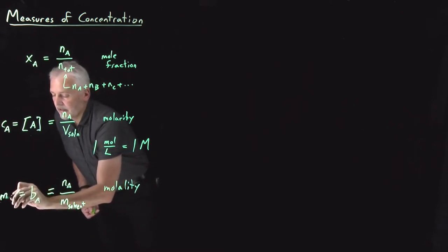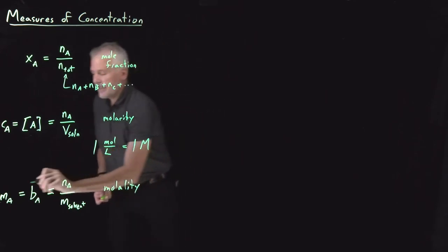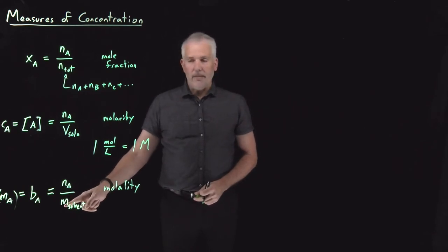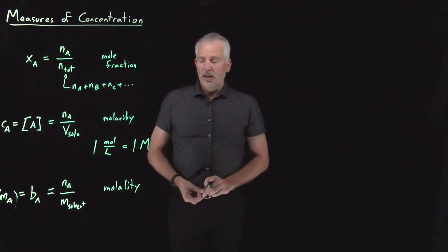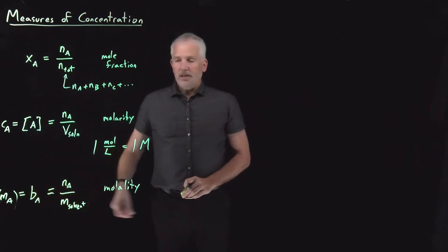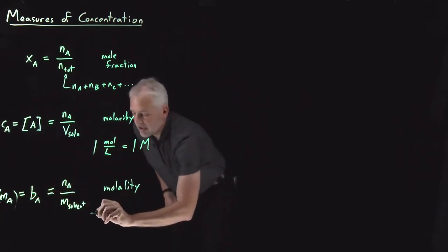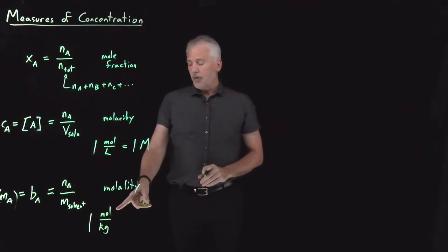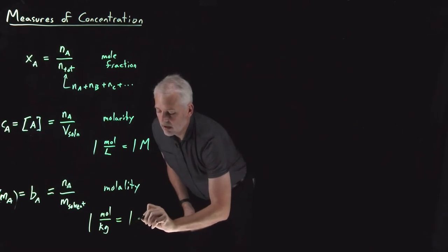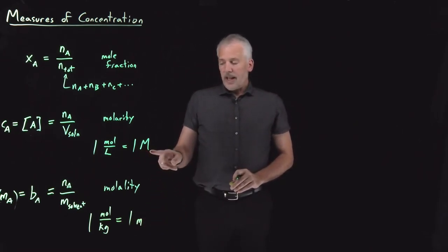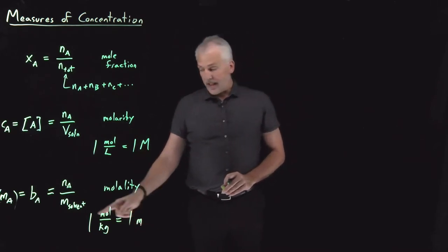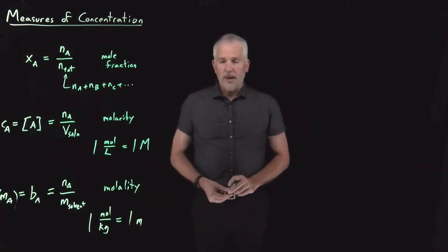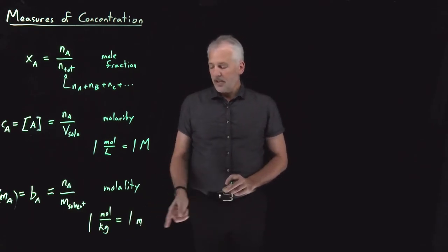Molality can be written as lowercase m sub A, but that's confusing since m already serves as the variable for mass of the solvent in the same equation. So I prefer to use b sub A to describe molality. The units are moles of solute divided by mass of the solvent — if expressed in moles per kilogram, we use a lowercase m to denote the unit. So a solution with a molality of one mole per kilogram is called a one molal solution.